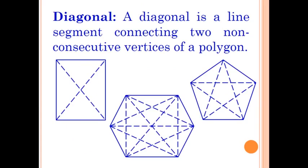Then come to what is the diagonal of a polygon. A diagonal is a line segment connecting two non-consecutive vertices of a polygon. Here are some polygons and the dotted lines drawn are the diagonals of these polygons.